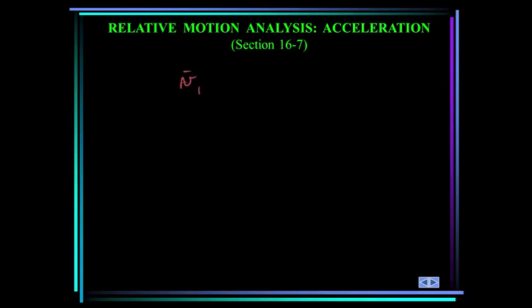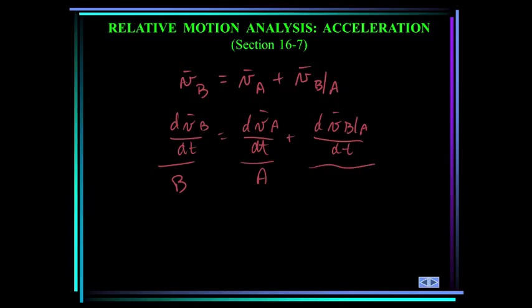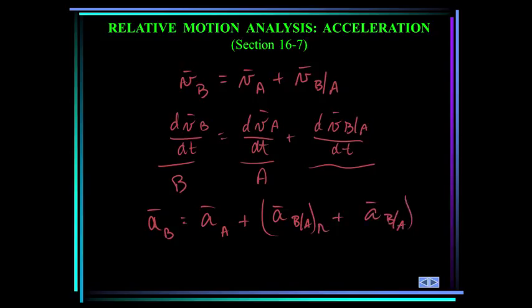Let's recall the relative velocity equation. The velocity of a point B on a body is equal to the velocity of a point A on a body, plus the velocity of B with respect to A. We covered that earlier this semester. Now I can differentiate this equation with respect to time. These two terms are the absolute accelerations of A and B, measured with respect to a fixed axis. This term is the acceleration of B with respect to A, and it includes both tangential and normal components. So we can write: acceleration of B equals acceleration of A, plus the acceleration of B with respect to A in the normal direction, plus the acceleration of B with respect to A in the tangential direction.